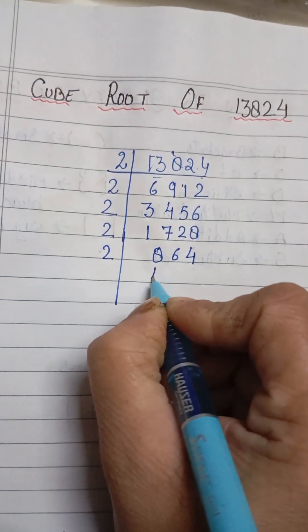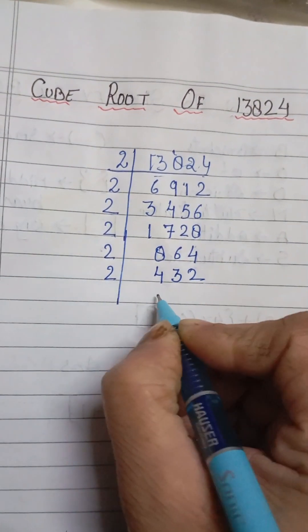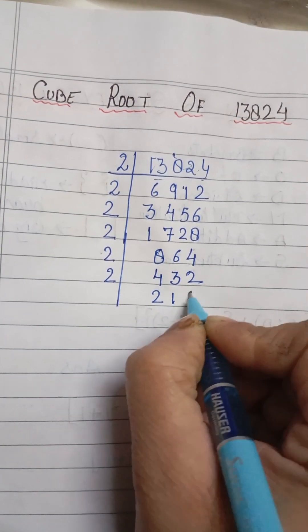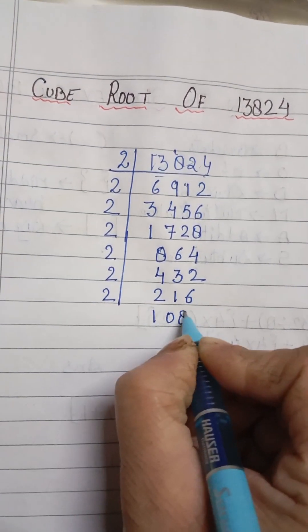Again it is divisible by 2. 2 times 4 is 8. 2 times 3 is 6. And 2 times 2 is 4. Again with 2. 2 times 2 is 4. 2 times 1 is 2. 2 times 6 is 12. 2 times 1 is 2. 0. 2 times 8 is 16.